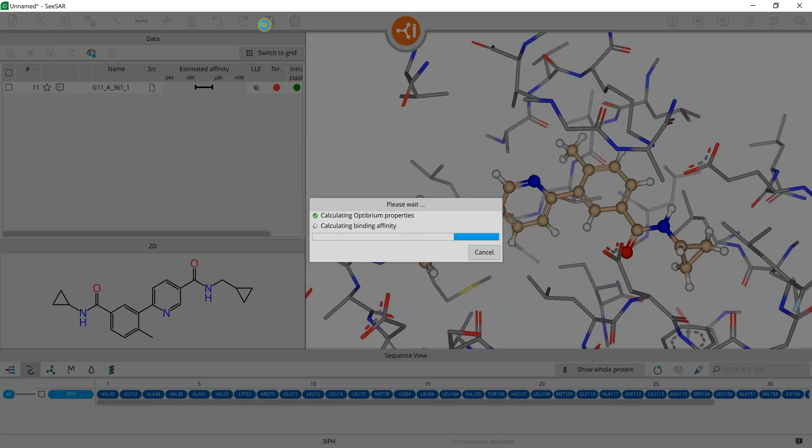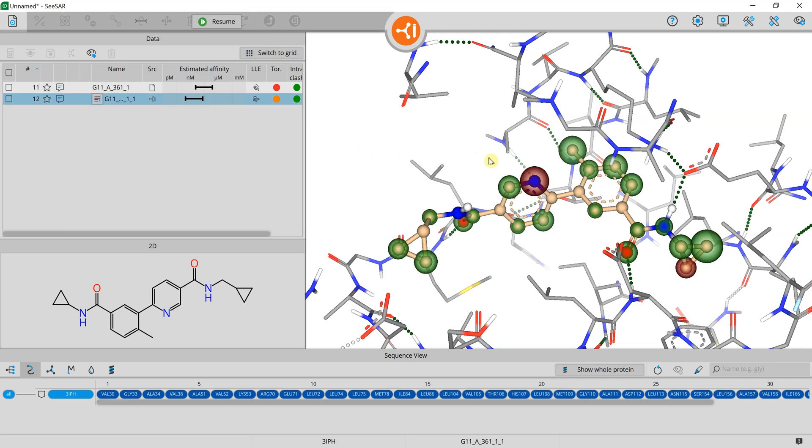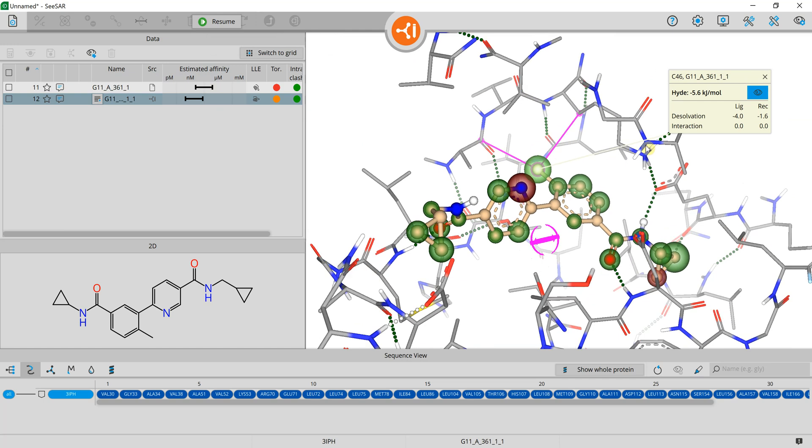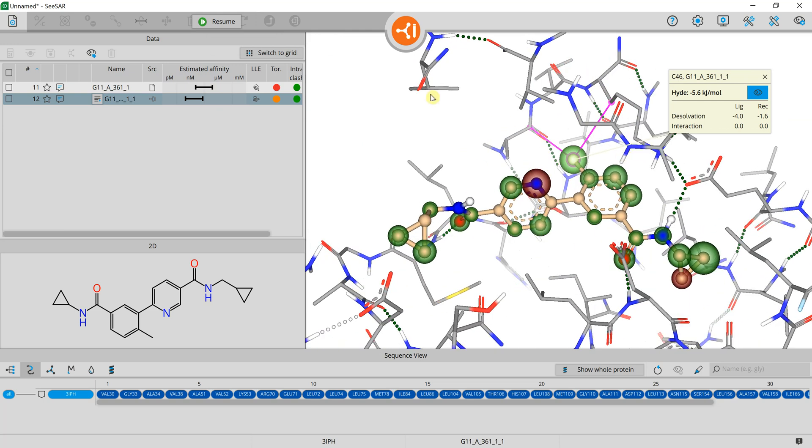We then click on the entry in the table and the green corona on the newly added carbon atom indicates a large contribution and an overall improved binding. We highlight the interacting atoms of the receptor by one click on the eye button and inspect how this methyl group interacts with the amino acid residues.